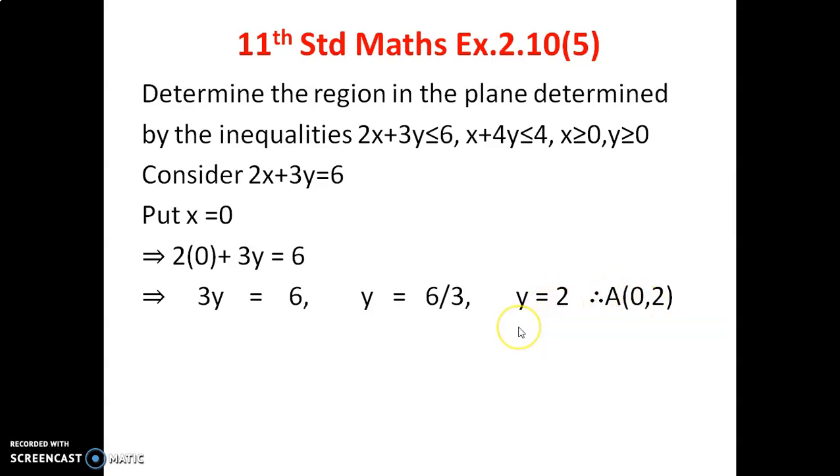Next, we are entering into second point. Put y equals 0. 3(0) equals 0, so 2x equals 6, x equals 6 by 2, answer is 3. Therefore, B point is (3,0).